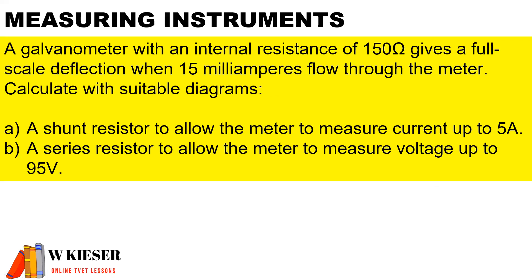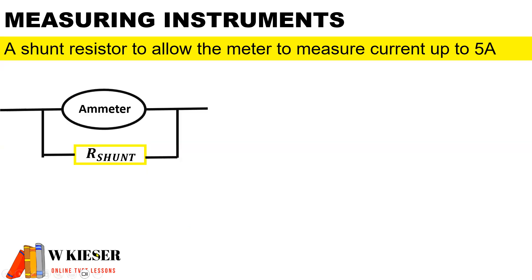In this question, a galvanometer with an internal resistance of 150 ohms gives a full-scale deflection when 15 milliamps flows through the meter. We need to calculate, with suitable circuit diagrams: part (a) a shunt resistor to allow the meter to measure current up to 5 amps, and part (b) a series resistor to allow the meter to measure voltage up to 95 volts.